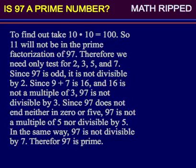Since 97 is odd, it is not divisible by 2. Since 9 plus 7 is 16, and 16 is not a multiple of 3, 97 is not divisible by 3.